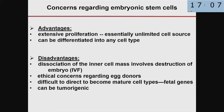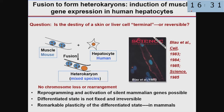The disadvantages are that you're dissociating the inner cell mass, which involves destruction of the embryo created by in vitro fertilization, and there are ethical concerns regarding egg donors. Also, it's not as easy as it sounds to direct the cell to become a mature cell type — these cells in culture usually express fetal genes, not adult genes. And there is a risk of tumorigenicity, forming tumors, as they are often karyotypically unstable.